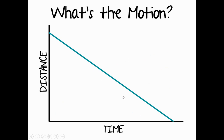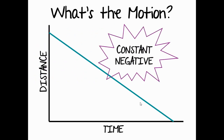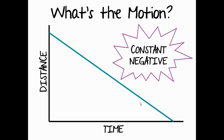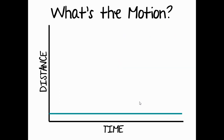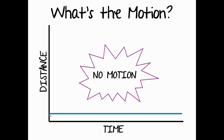This object is moving down the y-axis so it is negative motion, and because it is a straight line, that means constant speed — so this is constant negative motion. Time is passing and the object's distance is not changing, so this type of motion is no motion; the object is at rest.